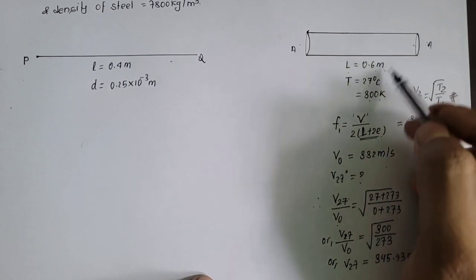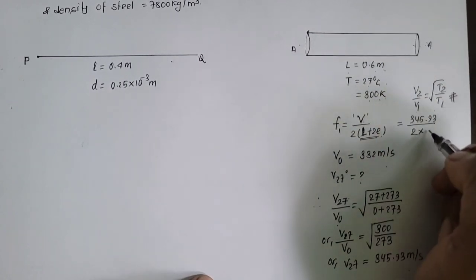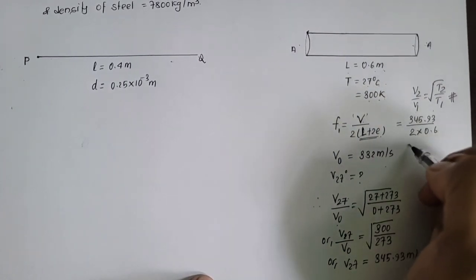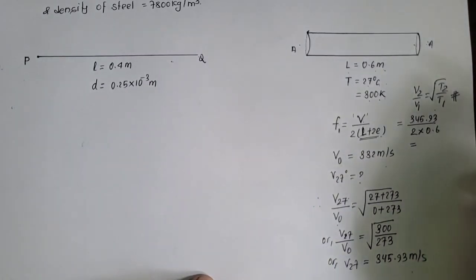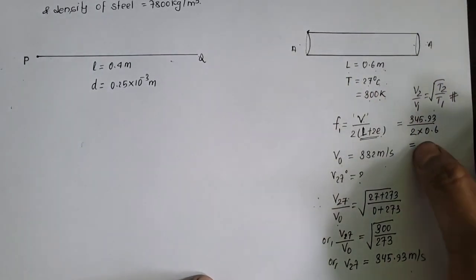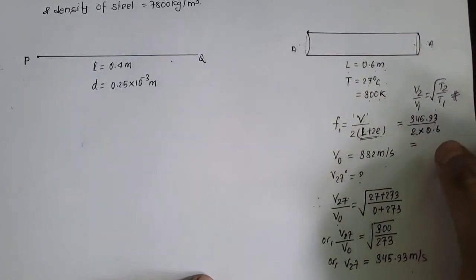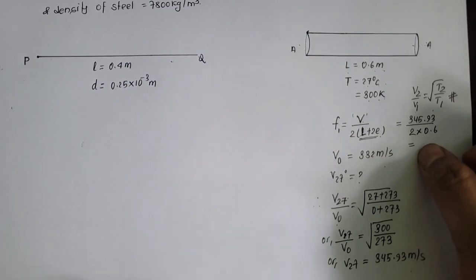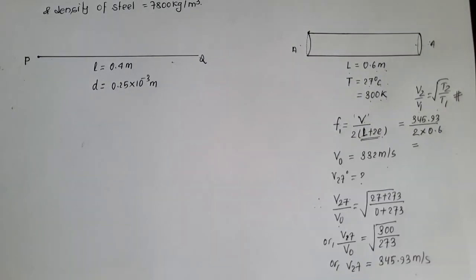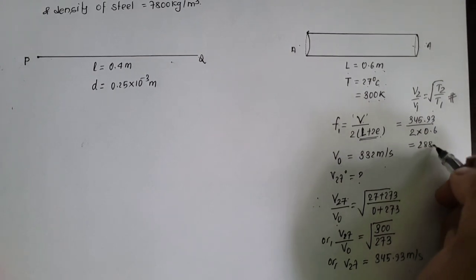यह सबे value solve fundamental mode ao vibration ma given tube oscillate garunda kheri. Tube bada produshone sound ko frequency nikalanos parowane value auns 288.28 Hz.